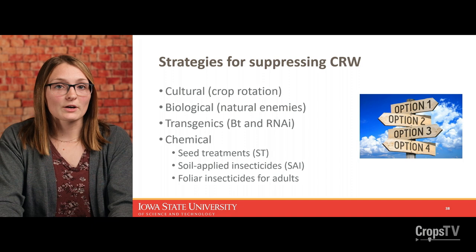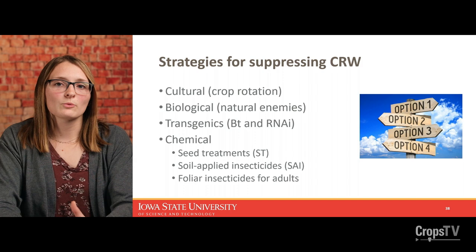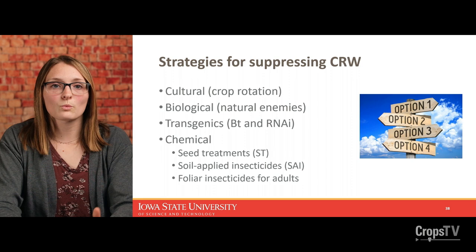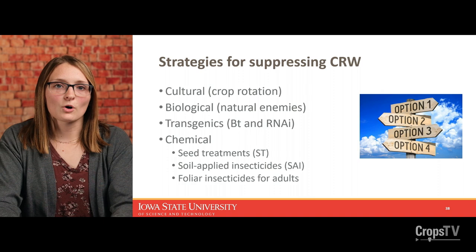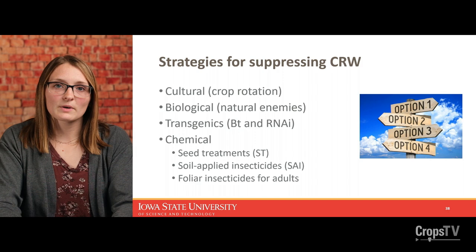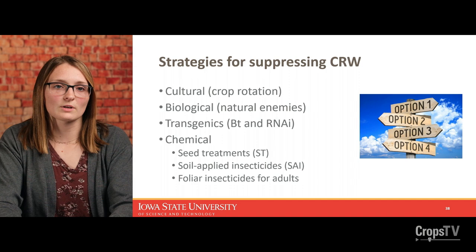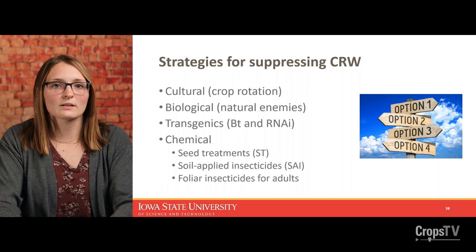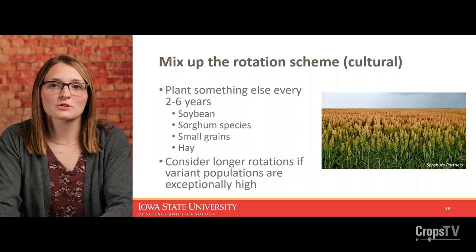All of these tools are still relevant for managing variant populations, but I'll put a caution on transgenics especially. When we think about western corn rootworm in Iowa, there's evidence that populations have overcome all four of the BT traits available. We need to be mindful of that. We don't have any evidence that northern corn rootworm has overcome these BT traits in Iowa, but it has happened in North Dakota and some other places. So let's not overuse those technologies.